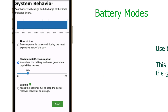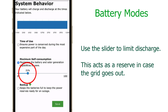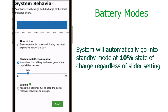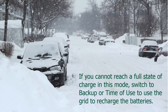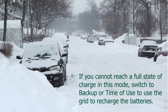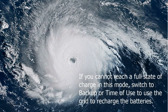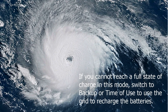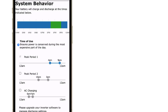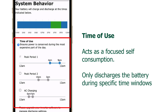If the solar and battery power cannot sustain the loads, then you are paying for any power you consume from the utility. There is a slider that limits the depth of discharge — this value becomes a reserve in case the grid goes down, since you did not allow the batteries to discharge to the low cutoff value of 10% state of charge. If you experience periods of bad weather and cannot fully charge the batteries, you may switch to backup mode or TOU mode to use the grid to fully charge the batteries.